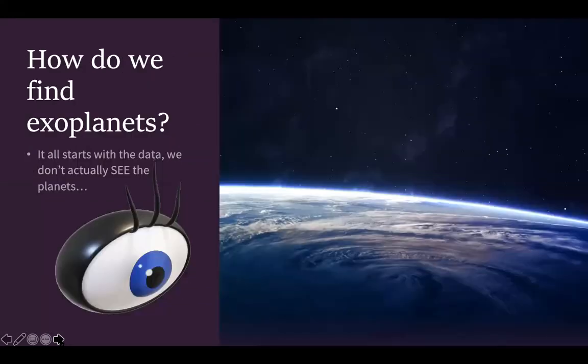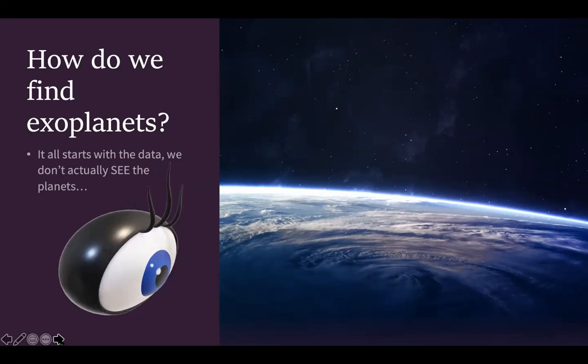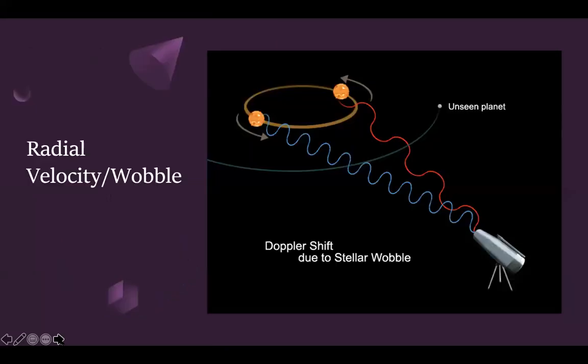How do scientists find exoplanets? It all starts with data. We don't actually see these planets the way we look through a telescope and see Mars, Venus, or Jupiter. The first method through which exoplanets were found was radial velocity, or wobbling.